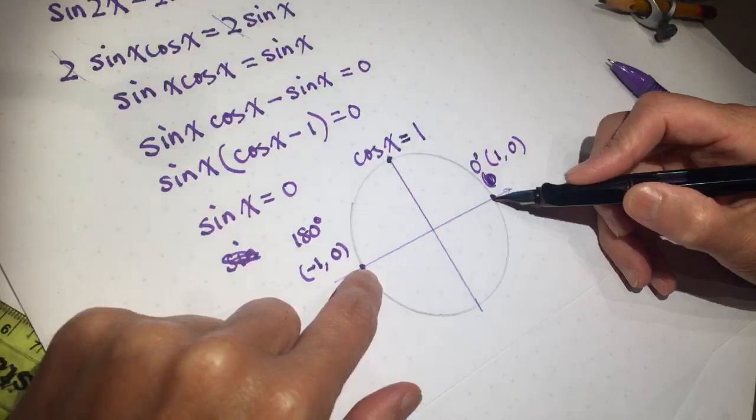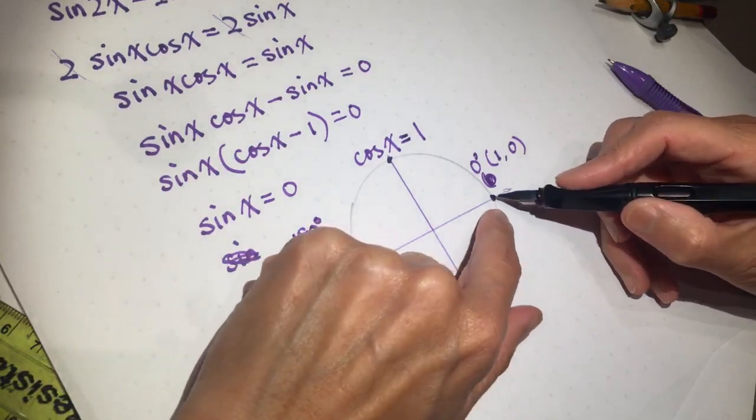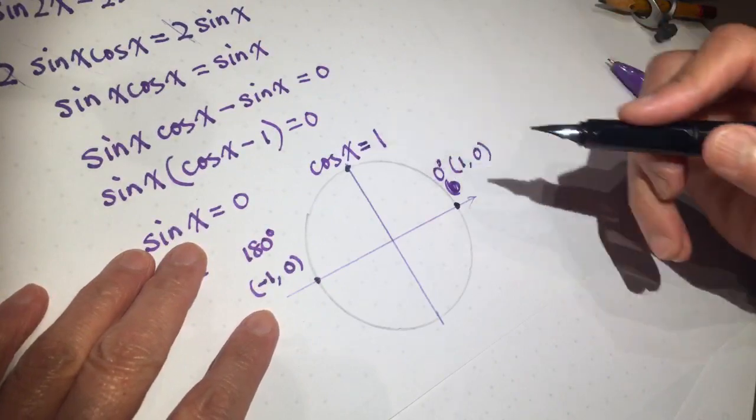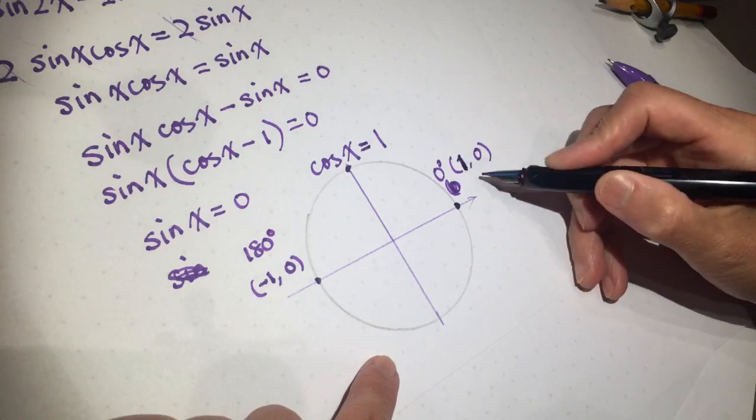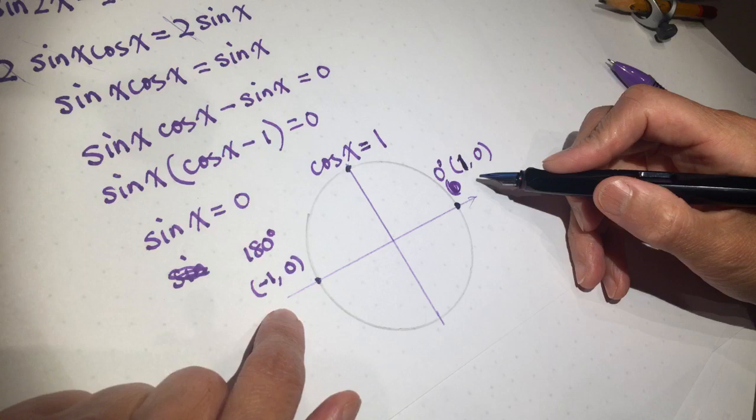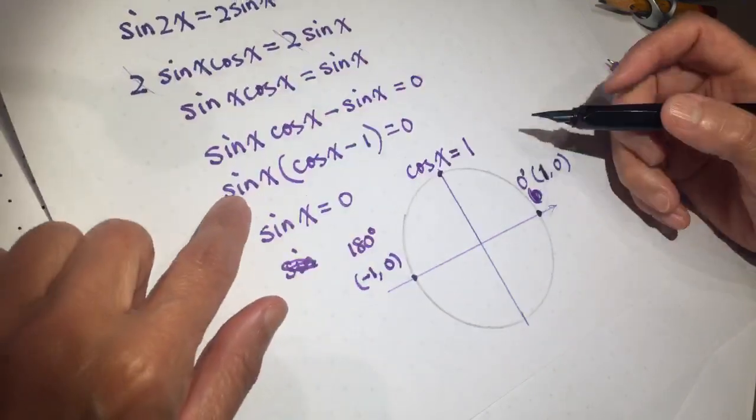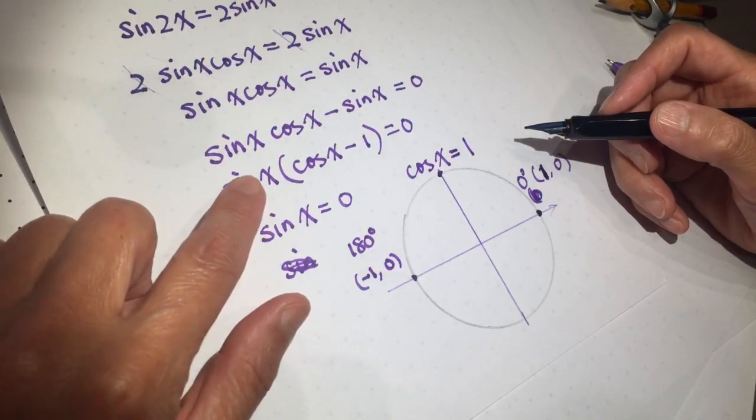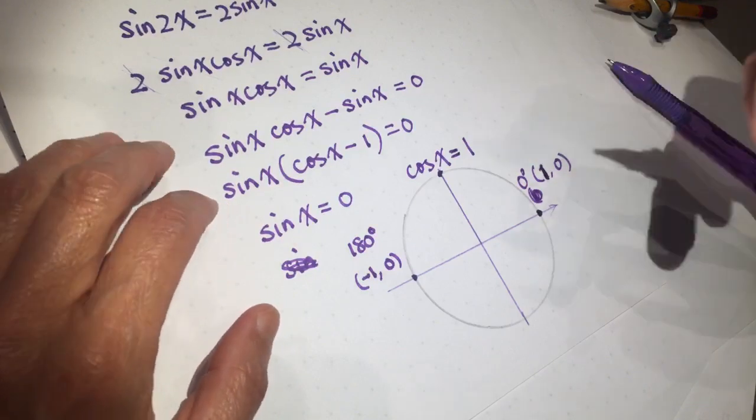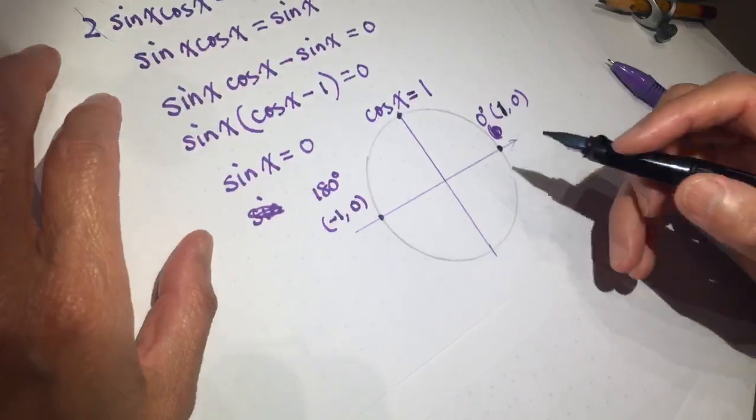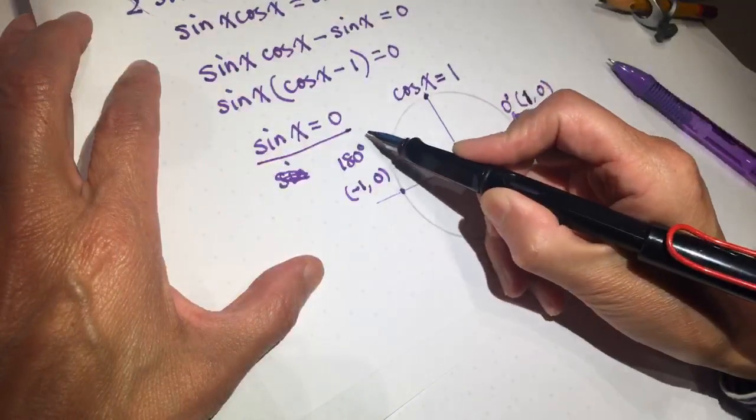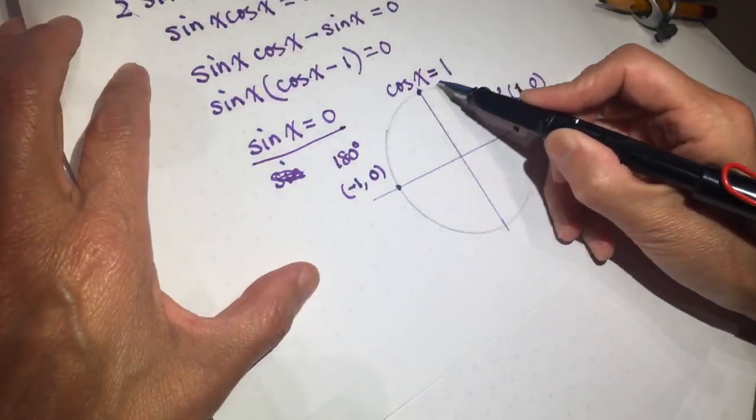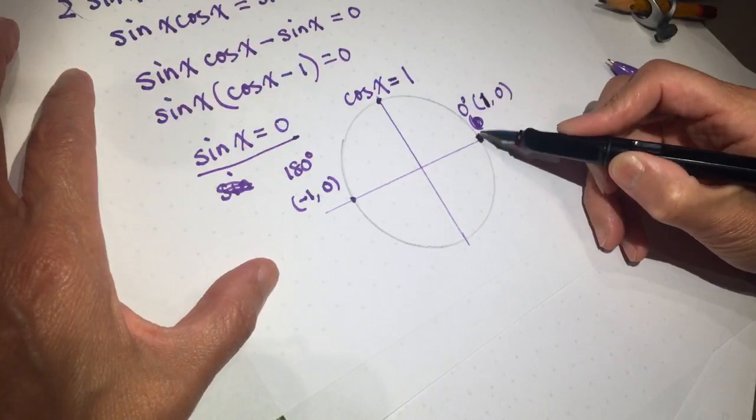And now we have cos(x) = 1. Cosine x value is one. How about cosine value is negative one? But this one still exists. So these two values. So only sin(x) = 0 can have two results. And cos(x) = 1 also has one result.